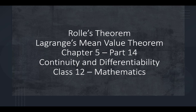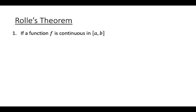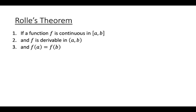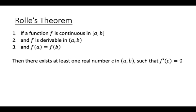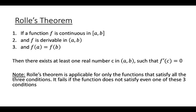Both theorems are deleted from our curriculum now, so we will discuss only the basics. Rolle's theorem: if a function f is continuous in the closed interval [a, b], derivable in the open interval (a, b), and f(a) equals f(b), then there exists at least one real number c in the open interval (a, b) such that f'(c) equals 0.